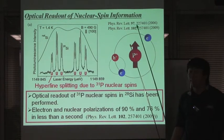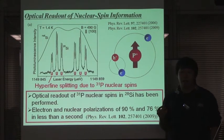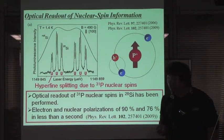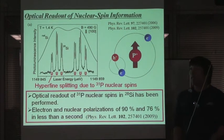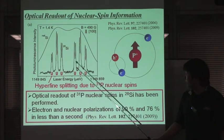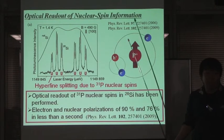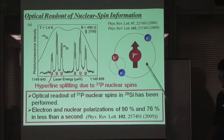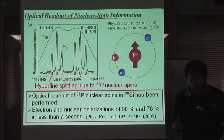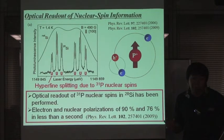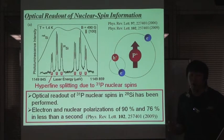This result indicates the possibilities of the optical readout of a single phosphorus nuclear spin qubit. Moreover, laser optical pumping to one of the fine peaks enables hyperpolarization of electron spins and phosphorus nuclear spins in less than one second. Therefore, optical readout of the nuclear spin qubit has many advantages for not only long-range information transmission, but also the initialization of the qubits.